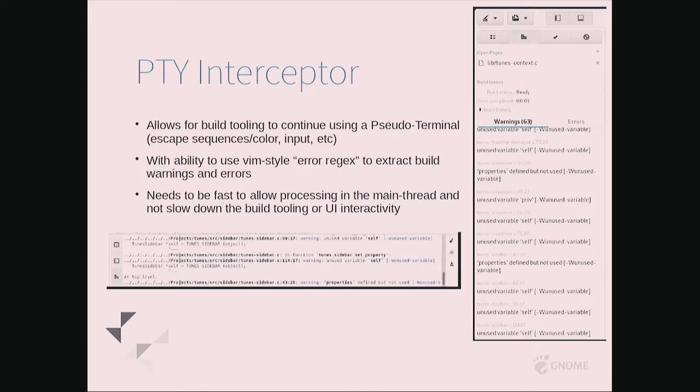The PTY interceptor is able to extract errors as they come across your terminal, even though that terminal really has nothing to do with Builder. It's just this pseudo-terminal from point to point, and we've interjected ourselves in the middle to extract errors. That's how we fill the build warnings you see on the side. It's not something you think of as being very complex, but it is a significant amount of engineering to make it work.